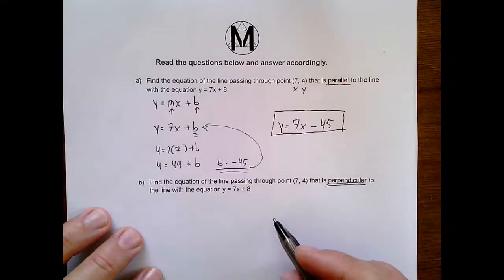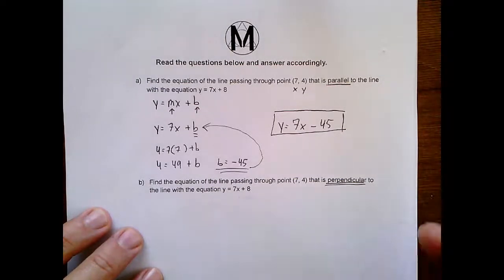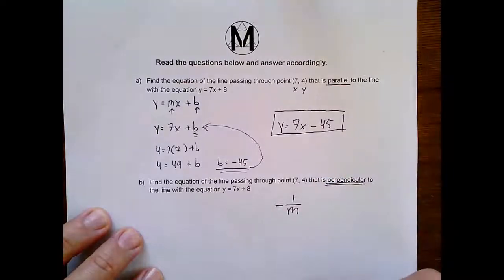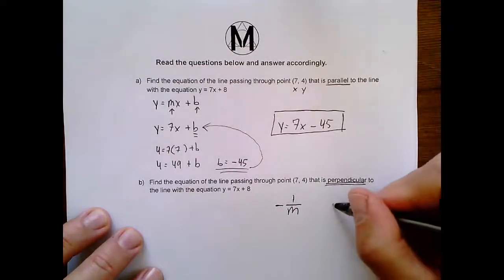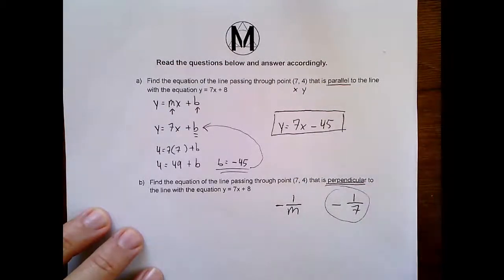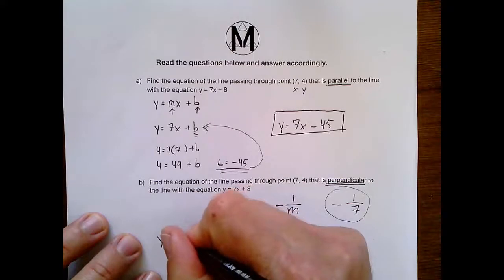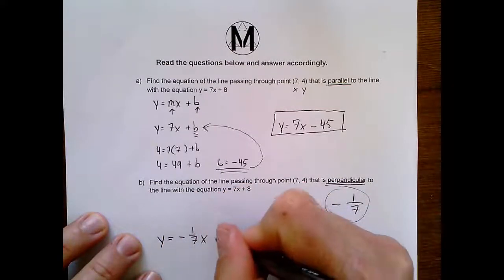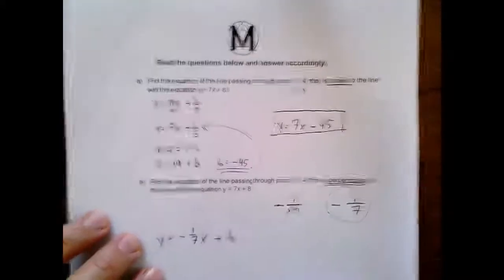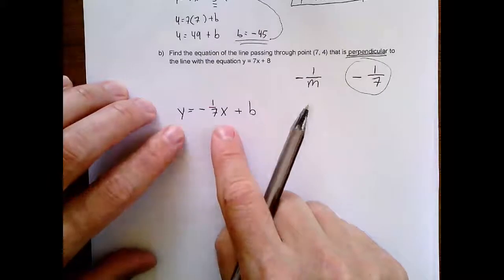its slope has the opposite reciprocal. So here the slope is 7. The opposite reciprocal is 7, and sometimes it will look something like this, the opposite reciprocal, right? So instead of 7, we actually would have negative 1 over 7, right? That's the opposite reciprocal. So going back over here to fill in, we'd say y equals, and my m value is negative 1 over 7, x plus b.